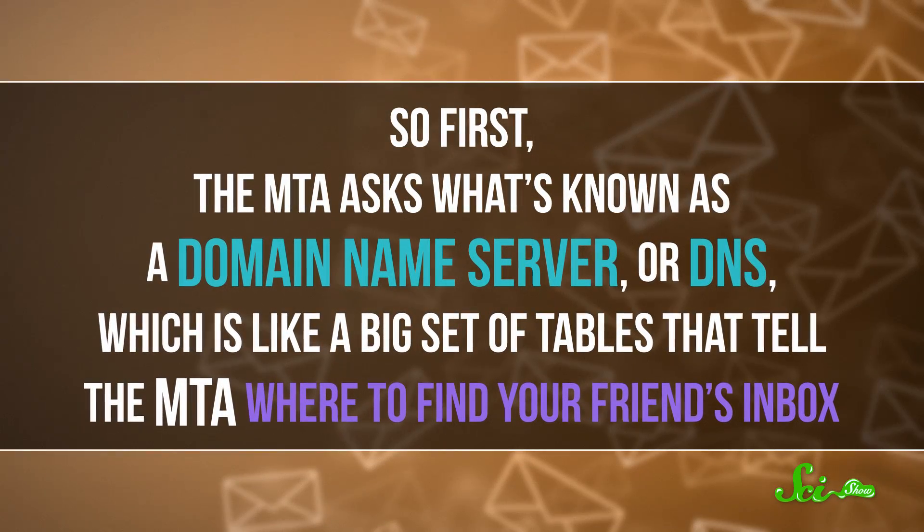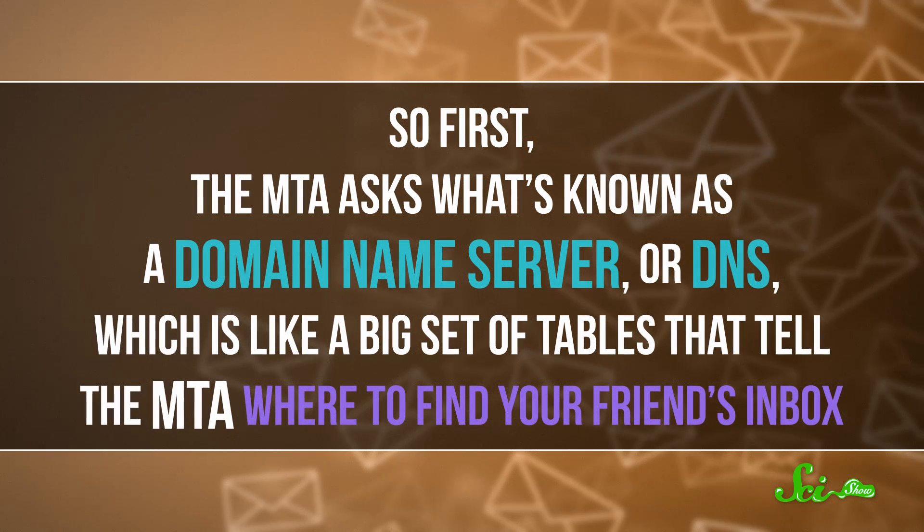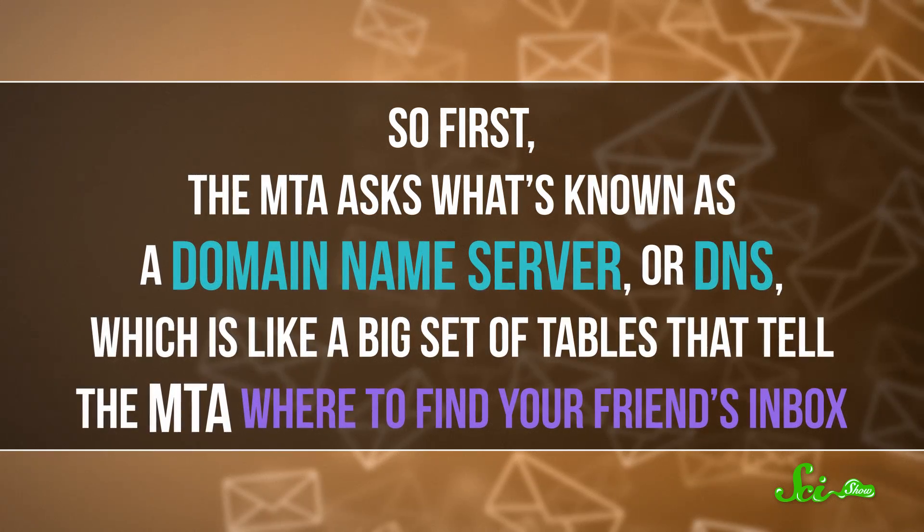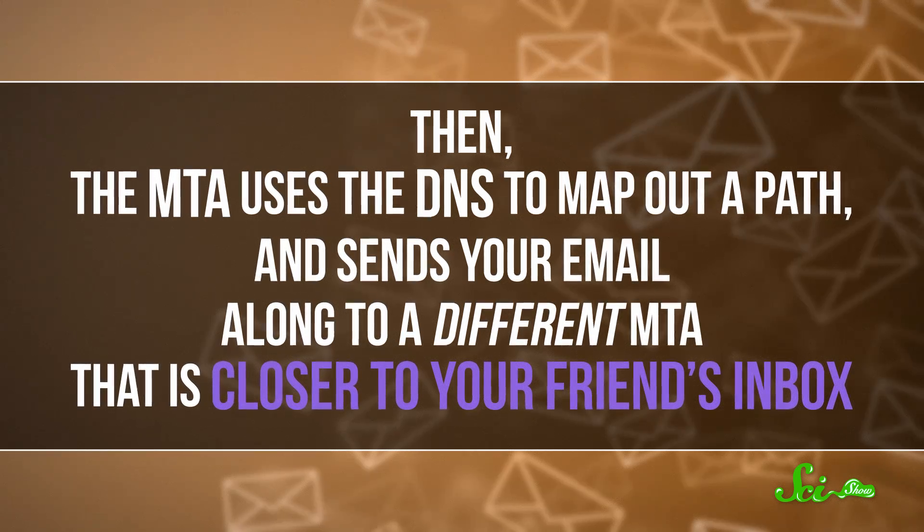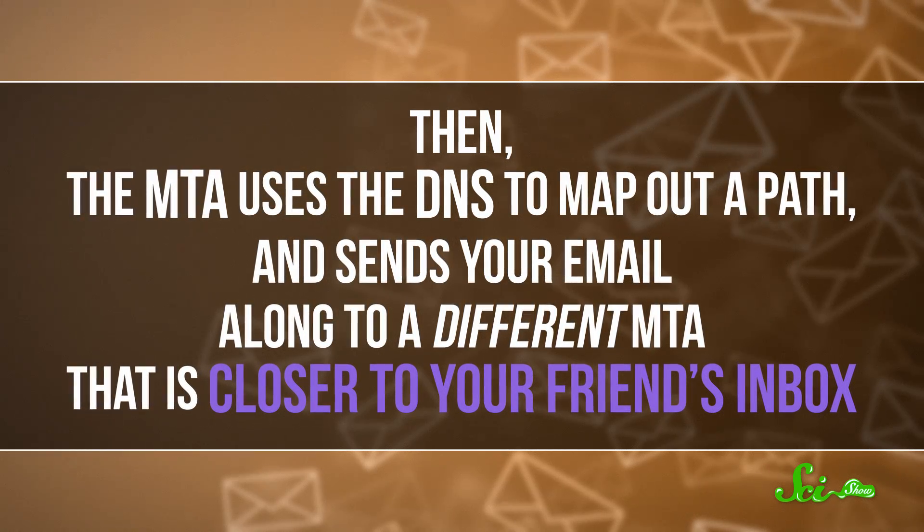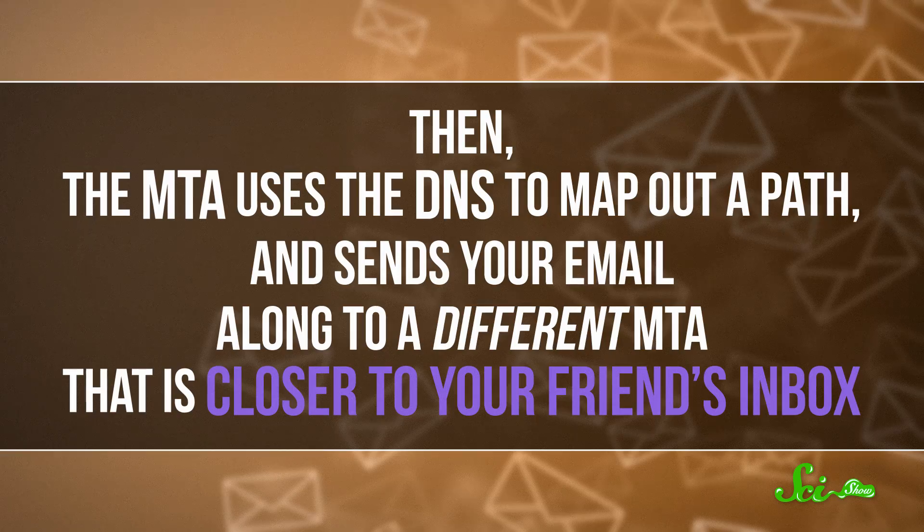So first, the MTA asks what's known as the Domain Name Server, or DNS, which is like a big set of tables that tell the MTA where to find your friend's inbox. Then, the MTA uses the DNS to map out a path, and sends your email along to a different MTA that is closer to your friend's inbox.